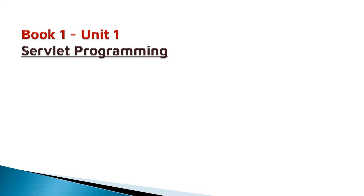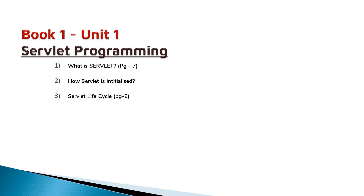In Book 1 Unit 1, that is Servlet Programming, you should know what is a servlet — the topic is available on page number 7. Next, you should know how a servlet is initialized, and the servlet life cycle, available on page number 9. You will also learn how a servlet dies. Next, HTTP Servlet Request interface and its methods are available on page number 12.